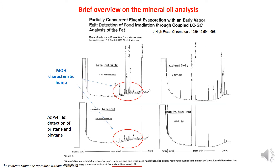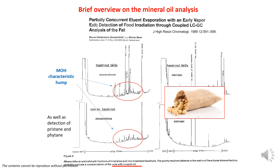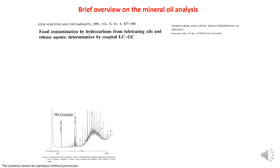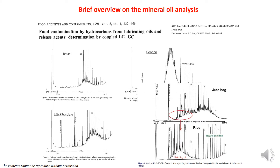In fact, by chance, while analyzing food for food-irradiation markers, a characteristic hump of mineral oil was found in a hazelnut sample, as well as the presence of pristane and phytane, which are markers of the mineral oil origin of the hump. Shortly after, it was understood that this contamination was coming from the jute bags where the hazelnuts were stored and transported. It was only in 1991 that the first systematic study appeared, and we started to see the characteristic hump trace of MOAH contamination — back then, only MOSH was considered.